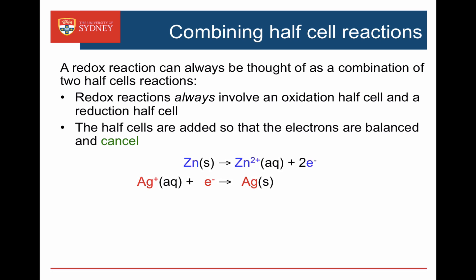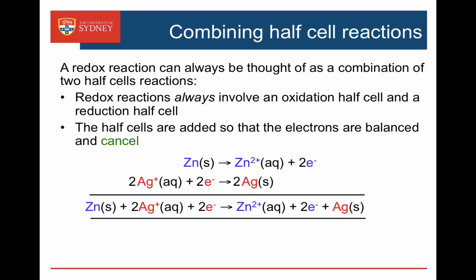Here we have an oxidation of zinc to zinc 2+ and 2 electrons, and a reduction of silver ions to silver metal involving one electron. So if I added these two together, I'd still end up with a net number of electrons. So I multiply the second one by 2 so that when I add them together, the electrons on both sides cancel and I'm left with a reaction between zinc metal and silver ions, giving zinc ions and silver.